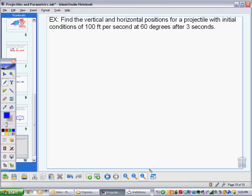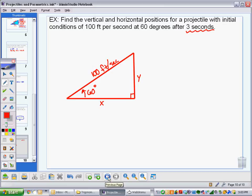So with that being the case, let's work a whole problem. This one says, find the vertical and horizontal positions for a projectile with initial conditions of 100 feet per second at 60 degrees after 3 seconds. Let's start with drawing a triangle. Draw my right triangle and it says that we are going 100 feet per second at 60 degrees. And so I need to find my horizontal and my vertical components. And we want to know at 3 seconds how far it's gone.